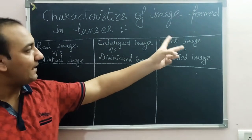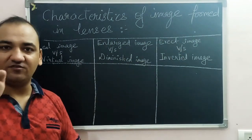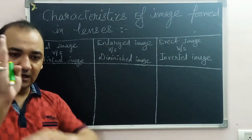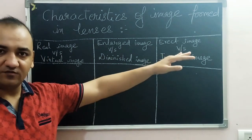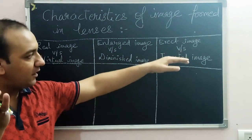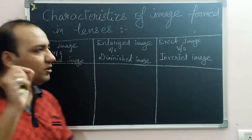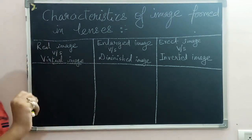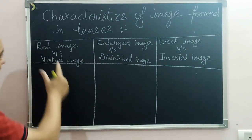The third pair is erect versus inverted image. An erect image is straight — it is upright along the principal axis. An inverted image is upside down, flipped relative to the object.